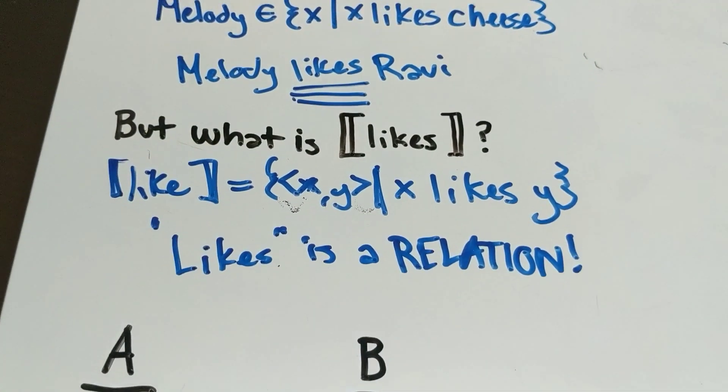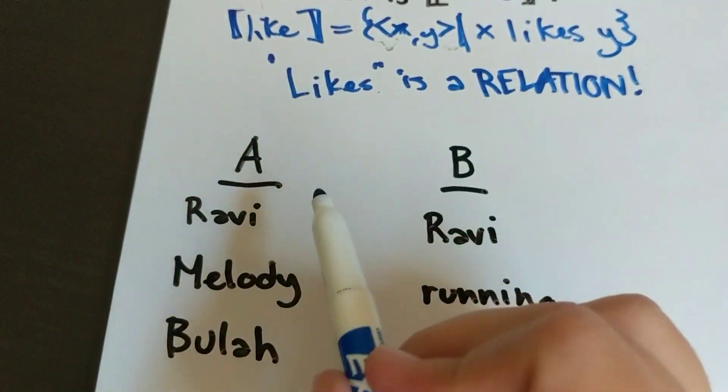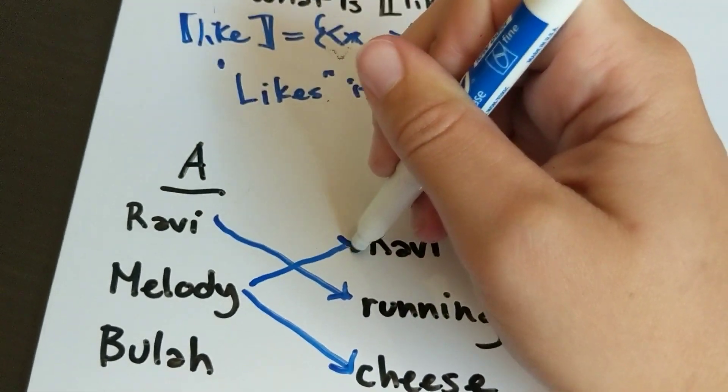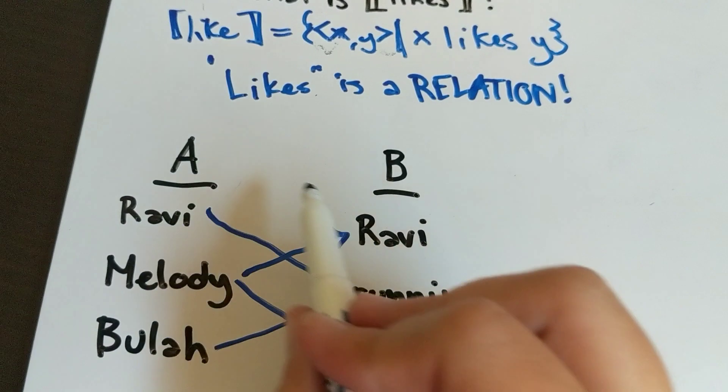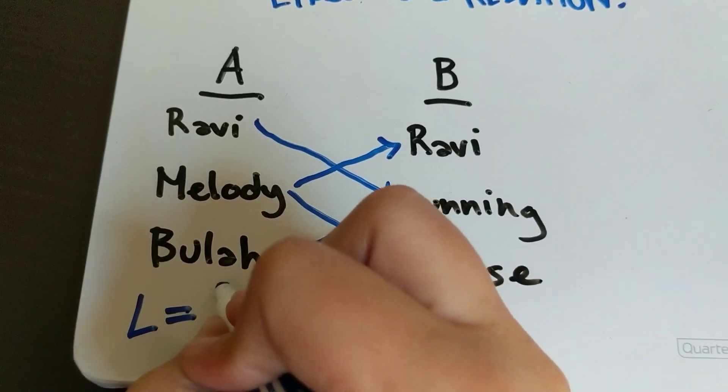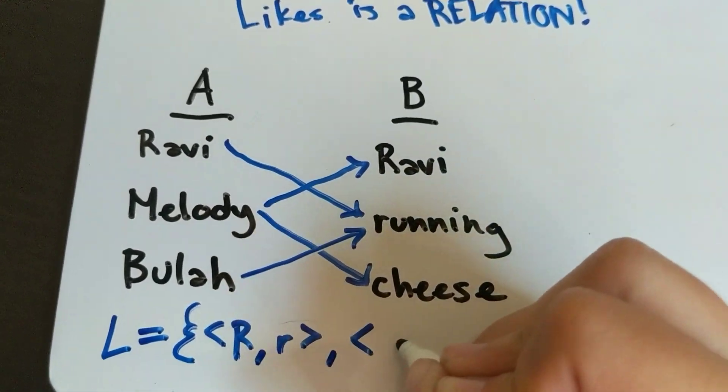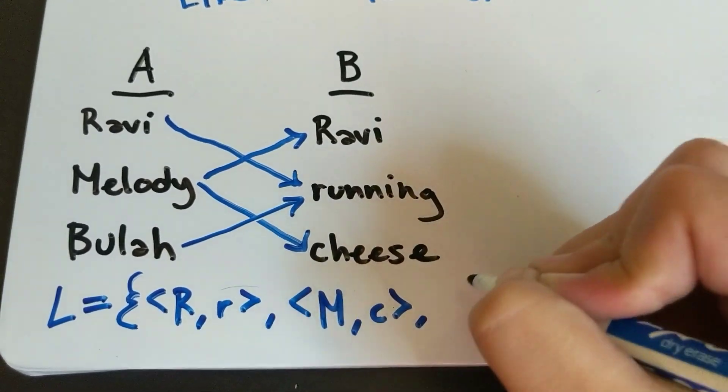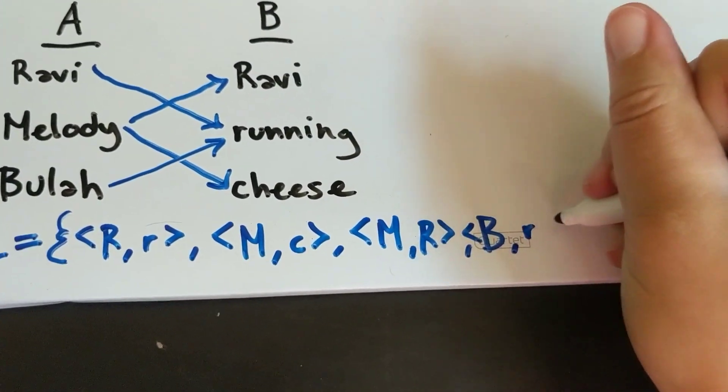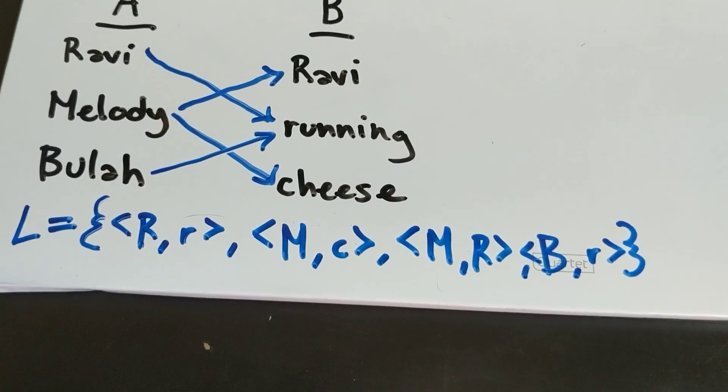Look at that: 'likes' is a relation between two sets, a set of likers and a set of likees. Here we have Ravi, Melody, and Beulah. We've already said that Ravi likes running, that Melody likes cheese and that Melody likes Ravi, and maybe Beulah likes running also. This is a relation which we could list like this: we could say L equals a set which includes the pairs Ravi-running, Melody-cheese, Melody-Ravi, and Beulah-running. This is the meaning of the verb 'to like.'